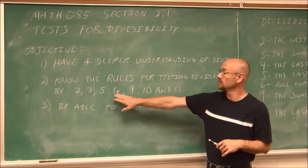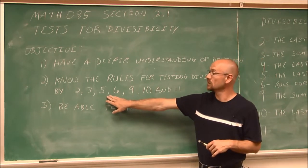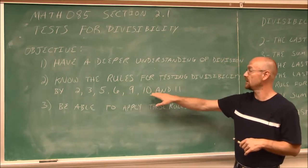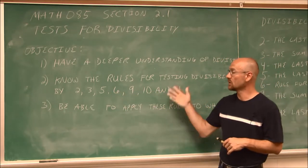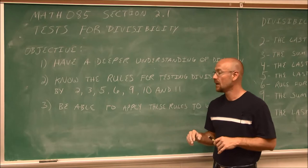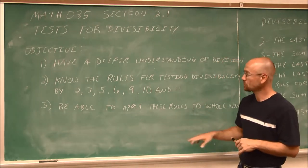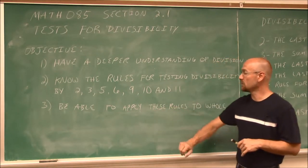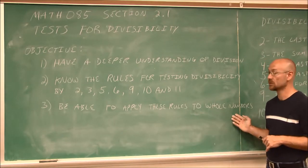We're going to define the rules for 2, 3, 5, 6, 9, 10, and 11. I've also included a few more because they're not too bad. The third objective is to be able to apply these rules to whole numbers.